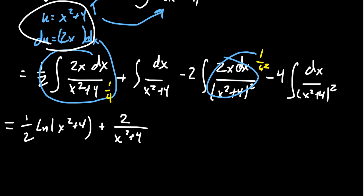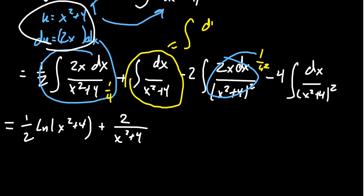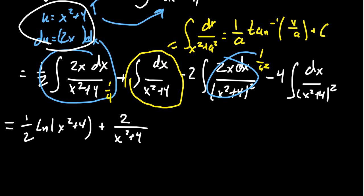For the second integral, dx/(x² + 4), I mentioned in a previous video that we want to memorize anything of the form dx/(x² + a²), whose antiderivative is (1/a) arctan(x/a) plus a constant. In this case a = 2, so we get one-half arctangent of x over 2.